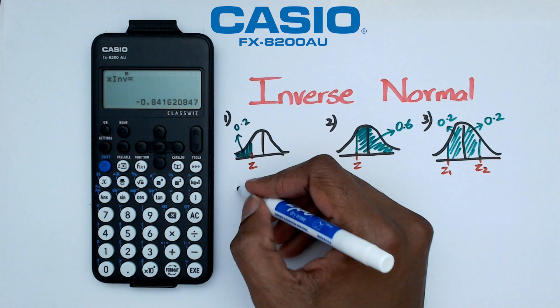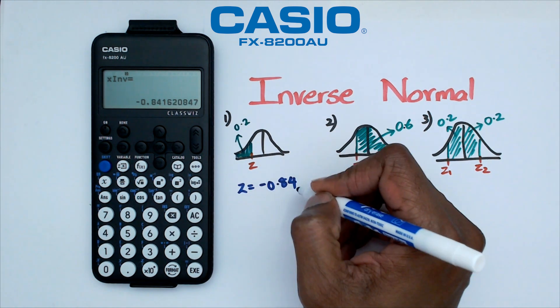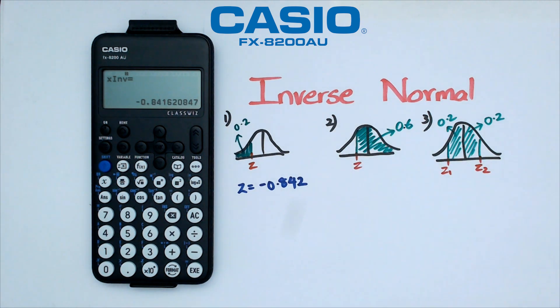There we go. We've got Z is equal to negative 0.842. So that's how you do number one.